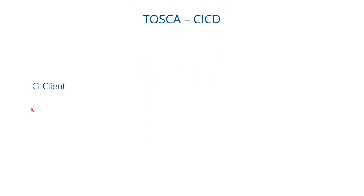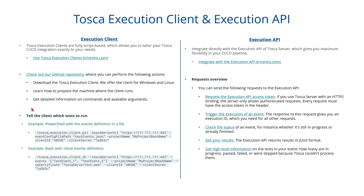Tosca offers two methodologies for CI/CD. The legacy method is called CICline, where you place a certain file on the Tosca server and executions get triggered automatically. The latest approach evolved by Tricentis is the API approach — specifically the Execution AOS API — with which you can trigger any test event from Tosca using any CI/CD tool like Jenkins or ADO. There is also something called the Execution Client, which is a PowerShell script with pre-coded API calls.